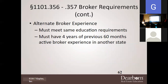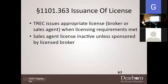For alternative broker experience, they must meet the same education requirements and have four years of the previous 60 months of active broker experience in another state. So if Travis was licensed as a broker in Florida and moved to Texas, as long as he's been active four years in the other state, he could meet the same education requirements and get his Texas license. TREC will issue the appropriate license — broker or sales agent — when licensing requirements are met. The sales agent license will be inactive until sponsored by a licensed broker.